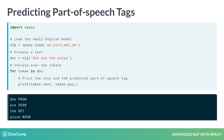In spaCy, attributes that return strings usually end with an underscore. Attributes without the underscore return an ID. Here, the model correctly predicted 'ate' as a verb and 'pizza' as a noun.